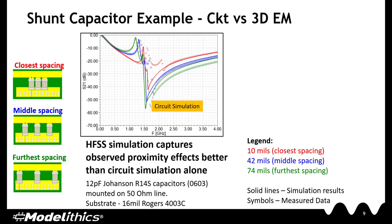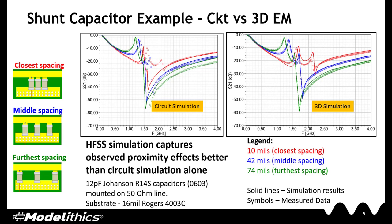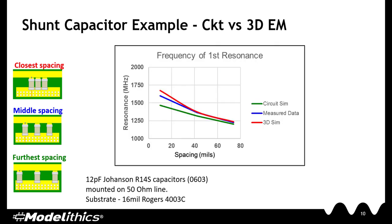Here are the S-parameter results for the capacitor coupling example. On the left, a comparison of measurement data, shown with symbols, and circuit simulation of the layout, shown in solid lines, is shown for three capacitor spacings. There is a notable shift in the measurement results from what the circuit simulation alone predicts. On the right, the measurement is compared to a 3D simulation of the same layout — notice that the 3D simulation accurately predicts the shift seen in the measurements. This plot tracks the shift in the first resonant frequency for circuit simulation, 3D simulation, and measurement data. The largest discrepancy occurs for the closest capacitor spacing. As spacing increases and coupling decreases, the three results show a better match.